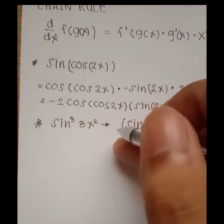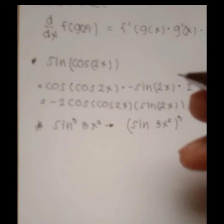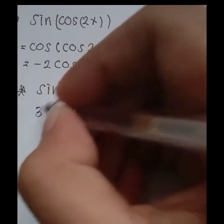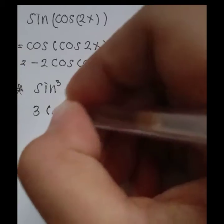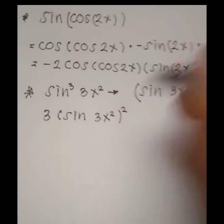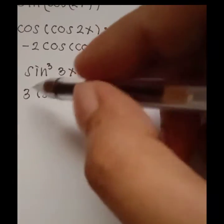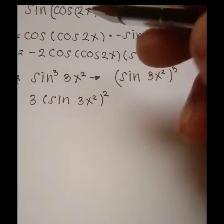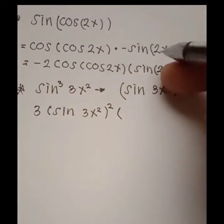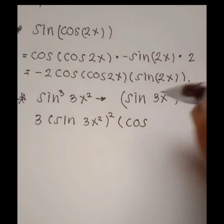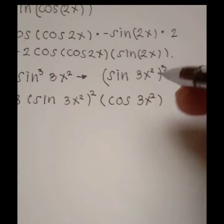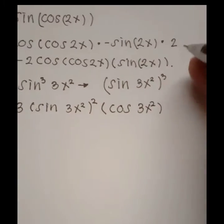We now derive this function using chain rule. First step: we write 3 times [sin(3x²)]² — we apply the power rule first before deriving the inside function sin(3x²). Then times the derivative of the inside function sin(3x²). The derivative of sine is cosine, so we write cosine and copy the inside function 3x², times the derivative of 3x².